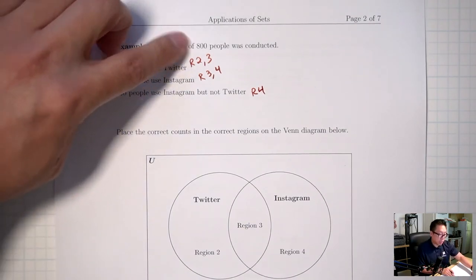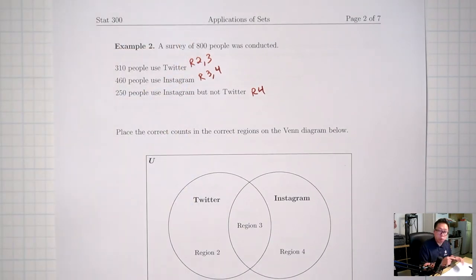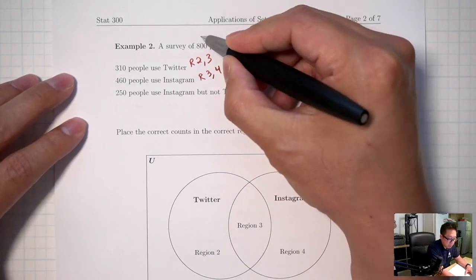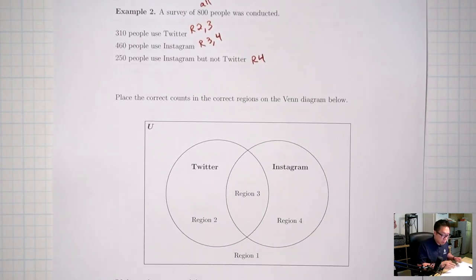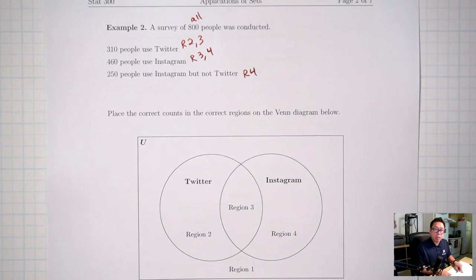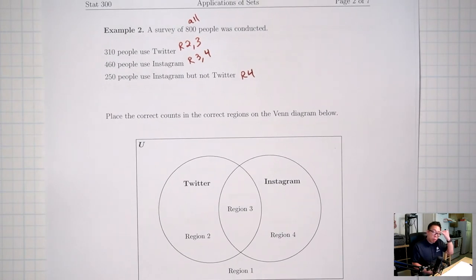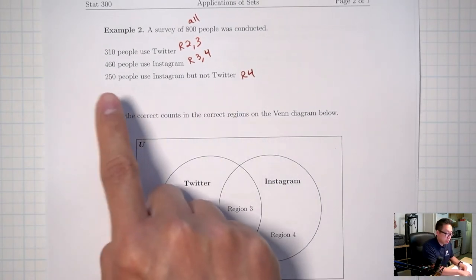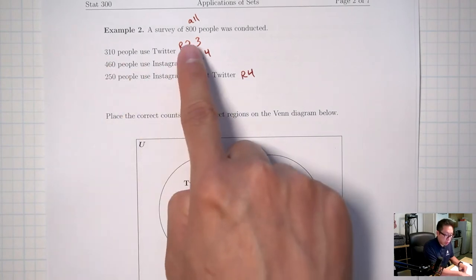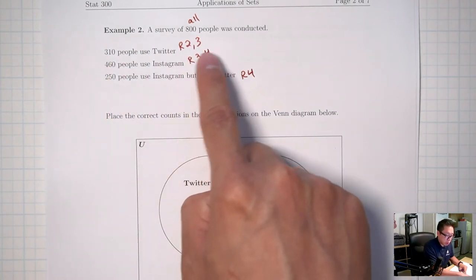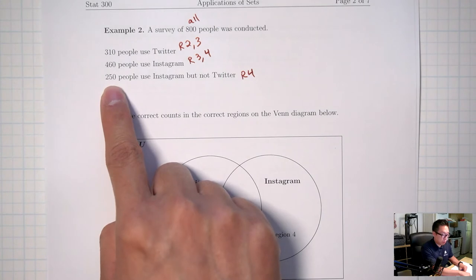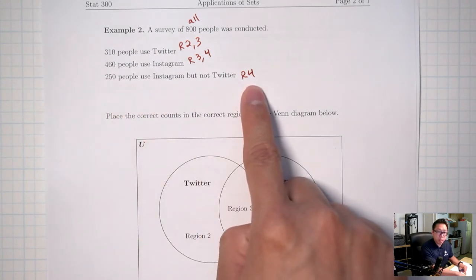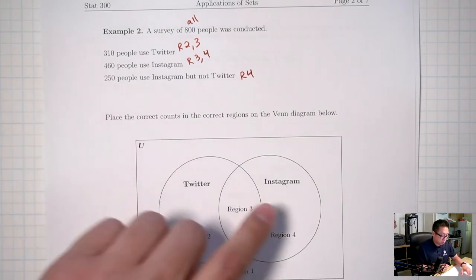800 is everybody total, so all four regions together equal 800. I'll start with the clue that represents a single region: the 250, which is region 4. So I'll put 250 in region 4.